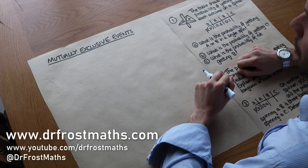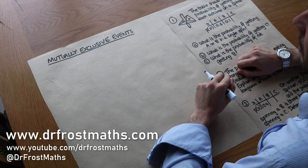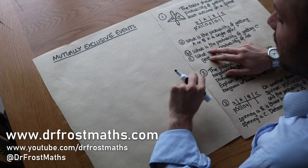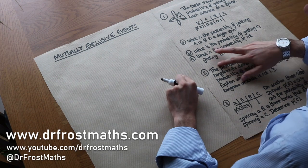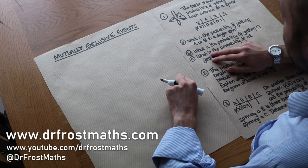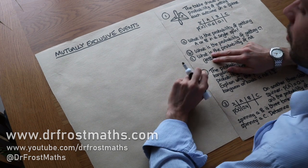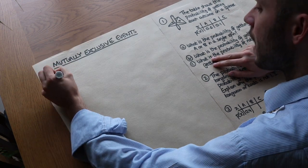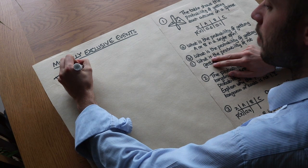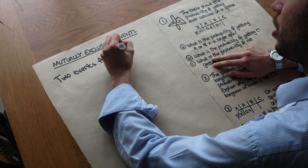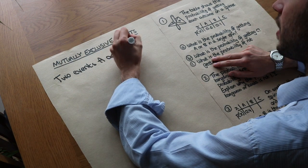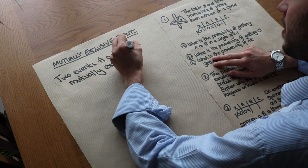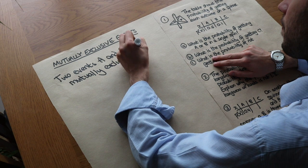Hello and welcome to this video on mutually exclusive events. Let's initially dive into the definition and then reflect on what that means. Two events A and B are mutually exclusive if they can't happen at the same time.